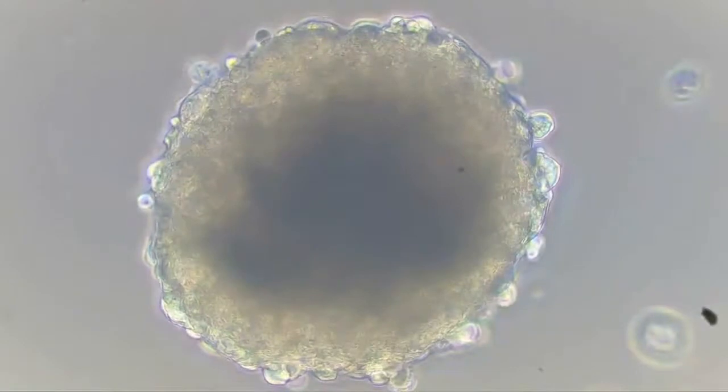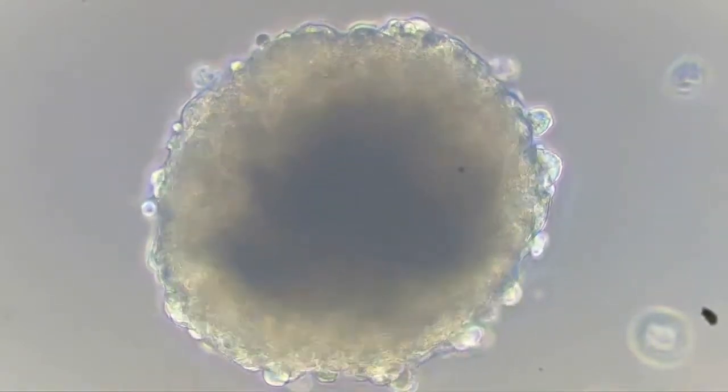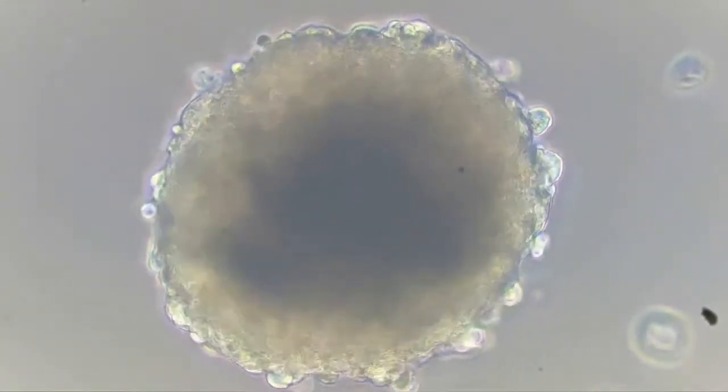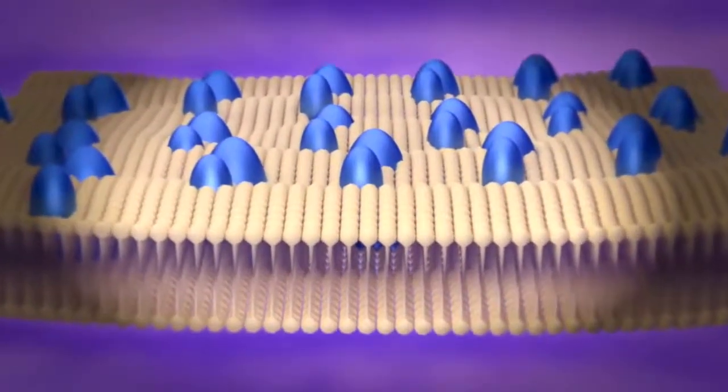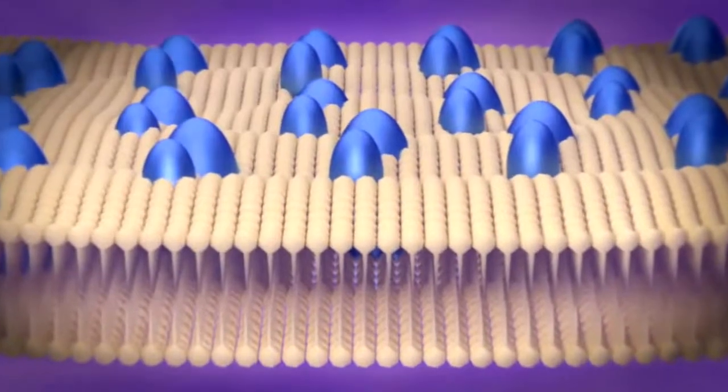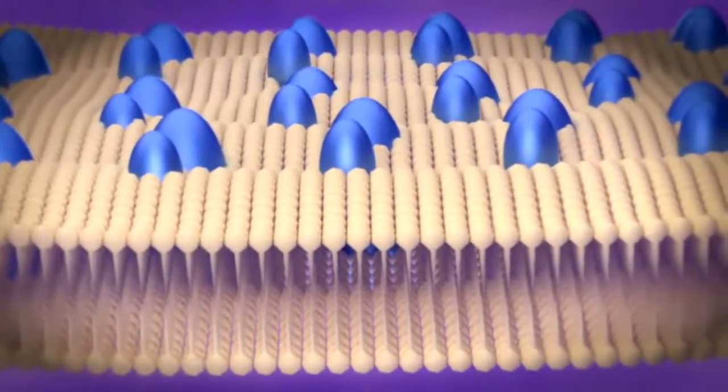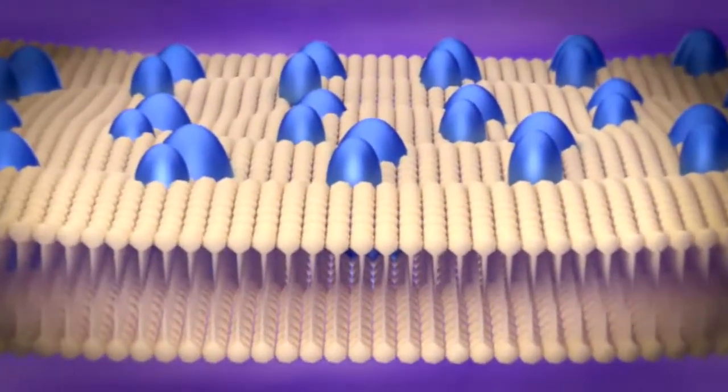There are two major tasks that have to happen every cell cycle. First, cells have to make an exact copy of their DNA. DNA is like the instruction manual for a cell. It encodes genes for characteristics and dictates things like eye color and blood type.